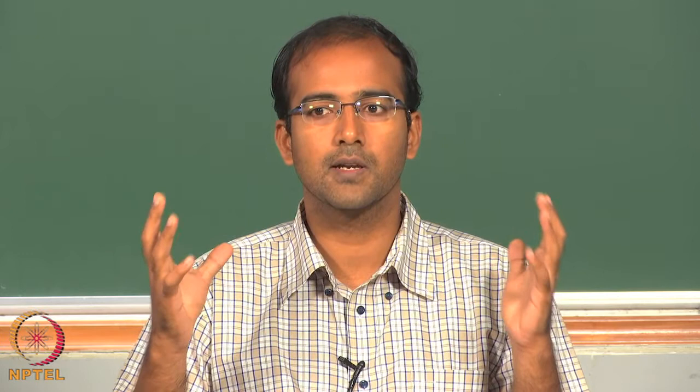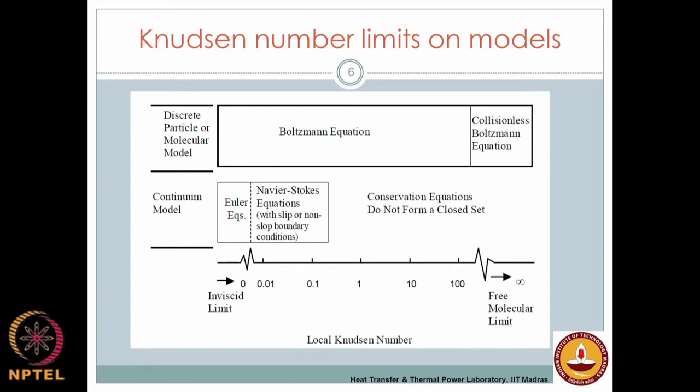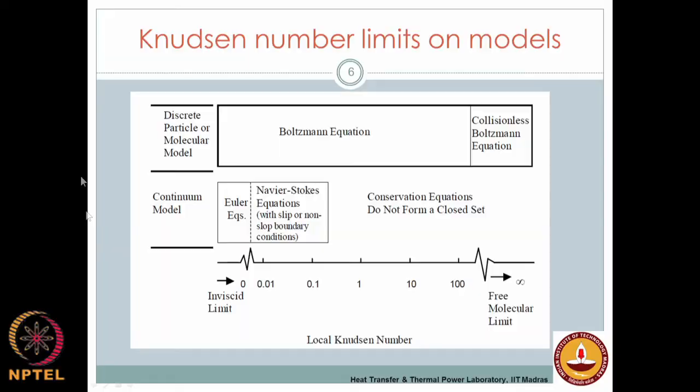At the small Knudsen number limit, device dimensions are substantially larger than the mean free path, so there are enough energy carrier collisions to statistically use some theory to describe average properties. The classification of theories as continuum or subcontinuum is based on Knudsen number. It is not sufficient to say continuum is valid if the length scale is microns — if the mean free path is also extremely large, continuum theories may still fail. The right approach is to evaluate the non-dimensional Knudsen number.